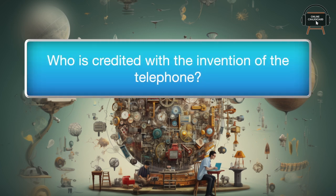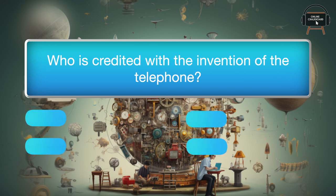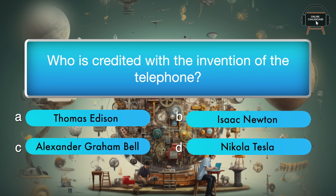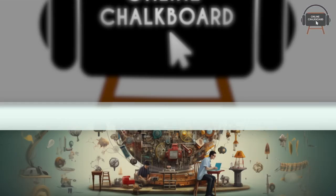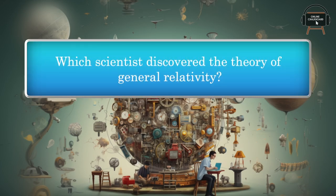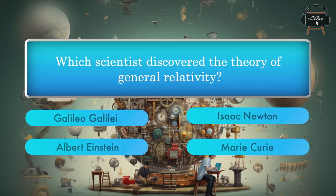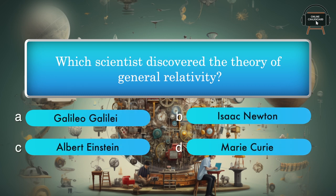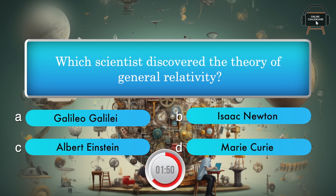Who is credited with the invention of the telephone? Answer: Alexander Graham Bell. Which scientist discovered the theory of general relativity? Galileo Galilei, Isaac Newton, Albert Einstein, Marie Curie. Answer: Albert Einstein.